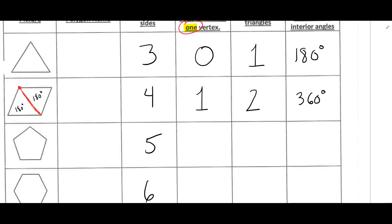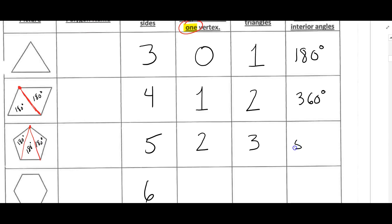For the pentagon, I'll pick the vertex at the top. I can draw two diagonals from that vertex, forming three triangles. Each triangle has 180 degrees, so 180 times 3 gives us 540 degrees for the sum of the interior angles of a pentagon.